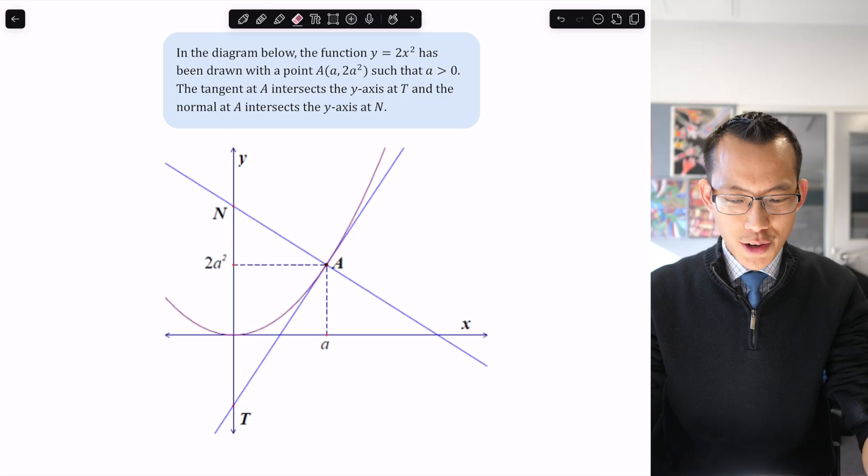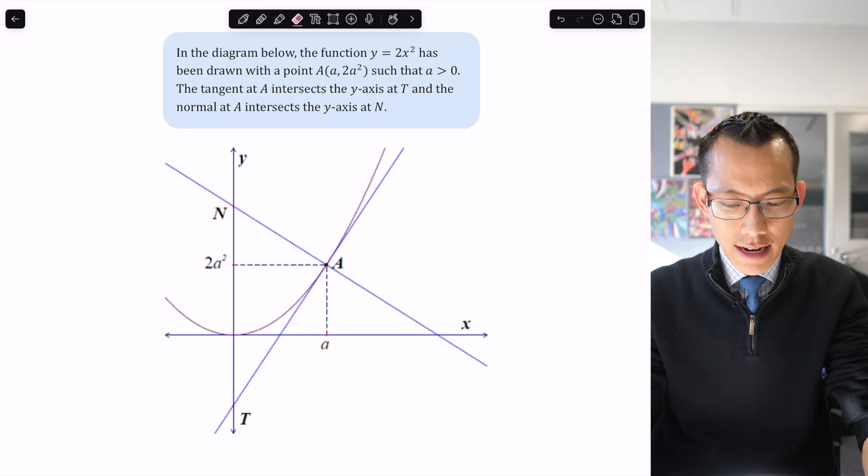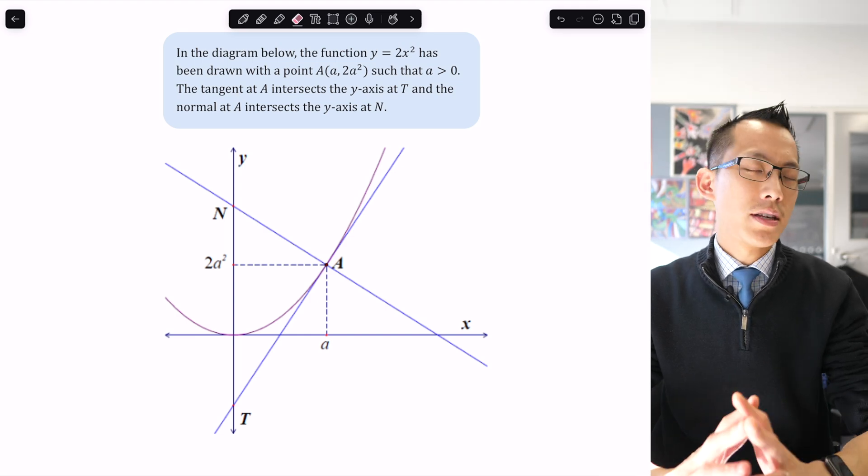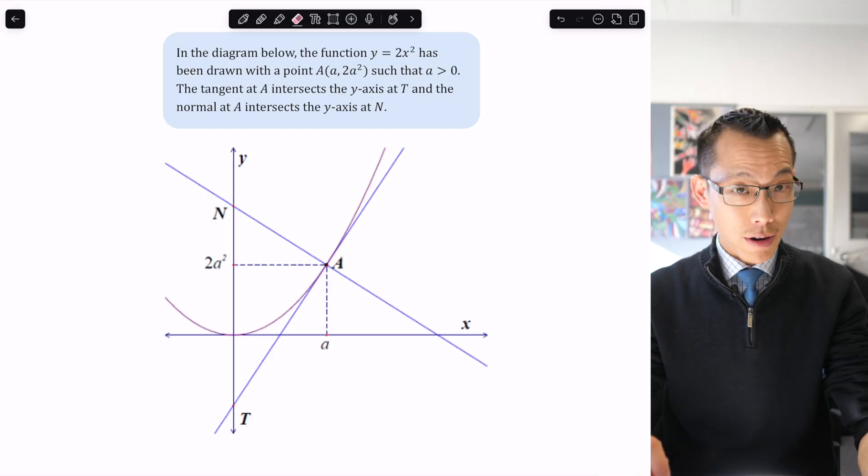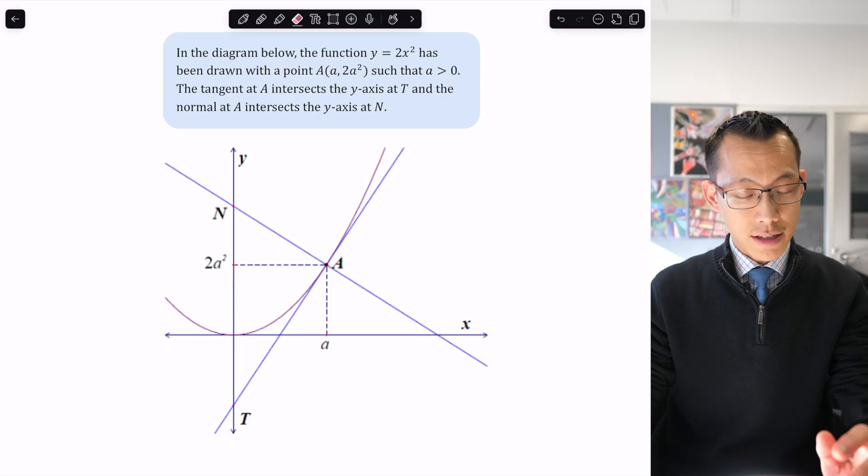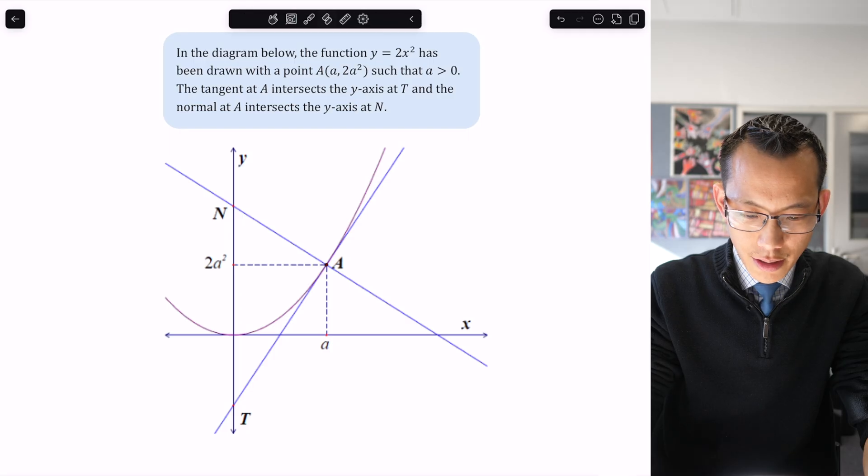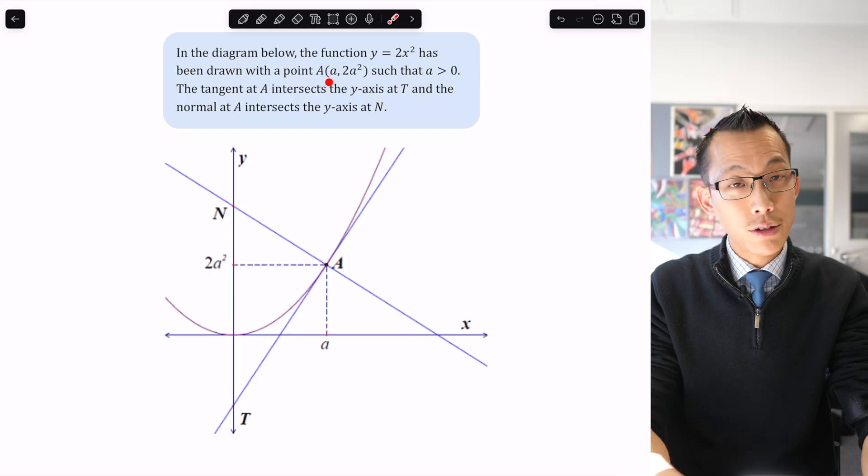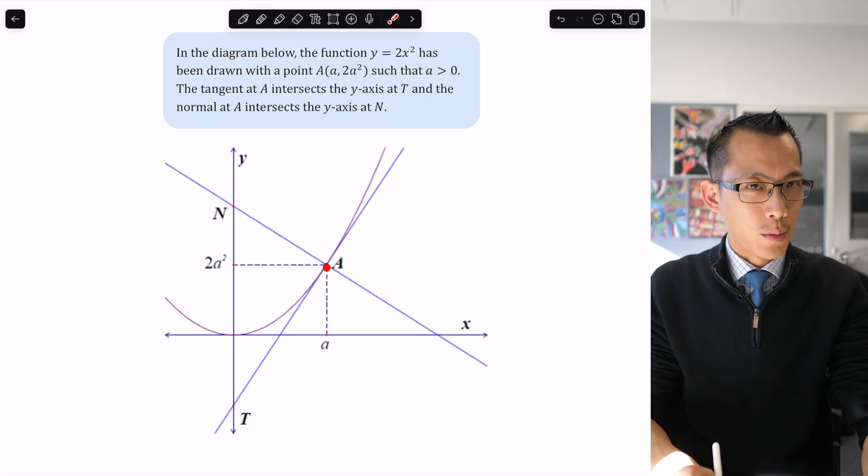In the diagram below, the function y = 2x² has been drawn with a point A at coordinates (a, 2a²) such that a > 0. Let's pause right there. We've got this parabola y = 2x² and point A with coordinates (a, 2a²) in the first quadrant.